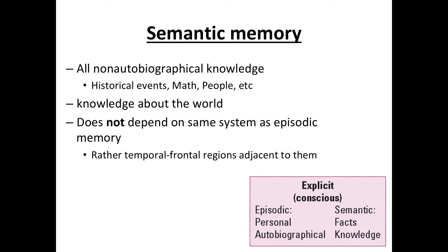The other part of explicit memory is called semantic memory. Semantic memory is all non-autobiographical knowledge, such as recognizing family and friends, information learned in school like reading, writing, and math, and knowledge about historical facts, events, and figures — for example, knowing who Charles Darwin is is a semantic memory. Unlike episodic memory, semantic memory does not depend on the medial temporal lobe and ventral prefrontal lobe memory systems; rather, it depends on temporal and frontal lobe regions adjacent to those important for episodic memory.